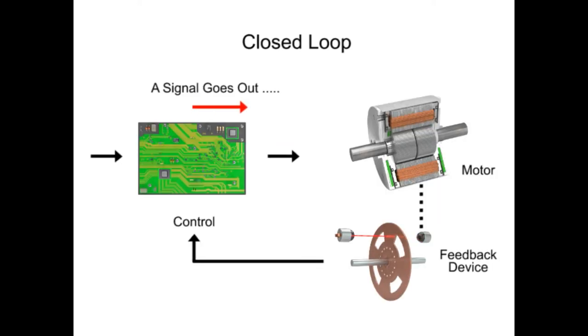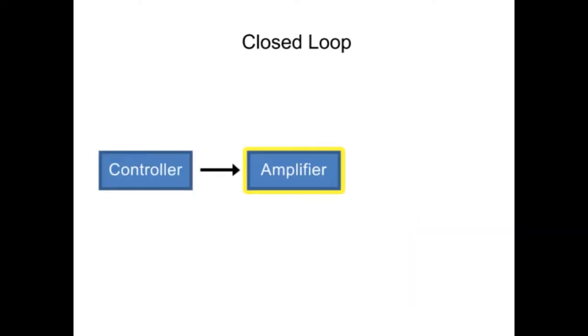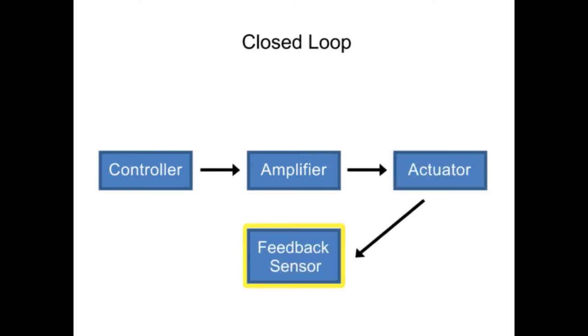Closed-loop systems, on the other hand, are designed to automatically maintain the desired output by comparing it with the actual condition. Feedback devices are used to control the outcome and are referred to as closed-loop.